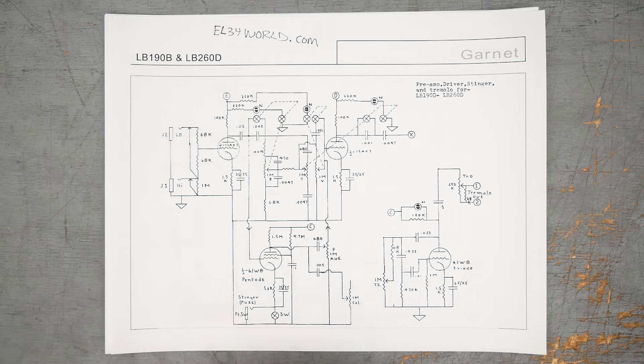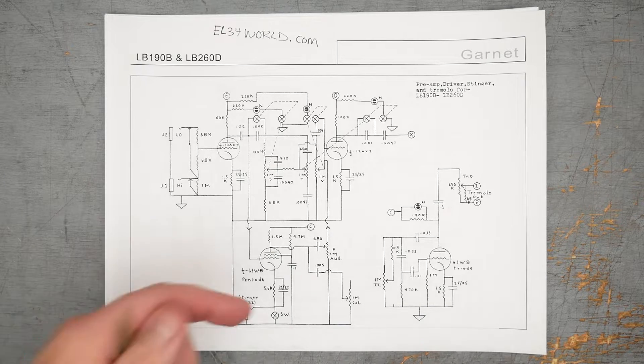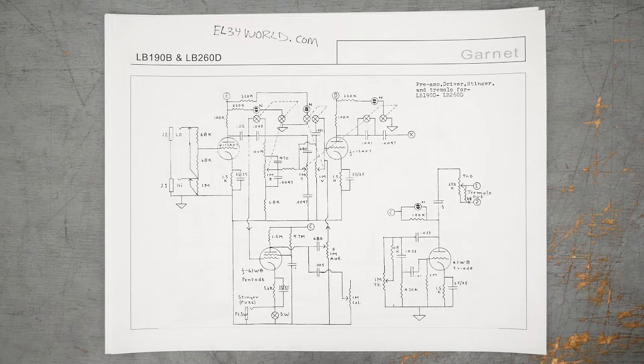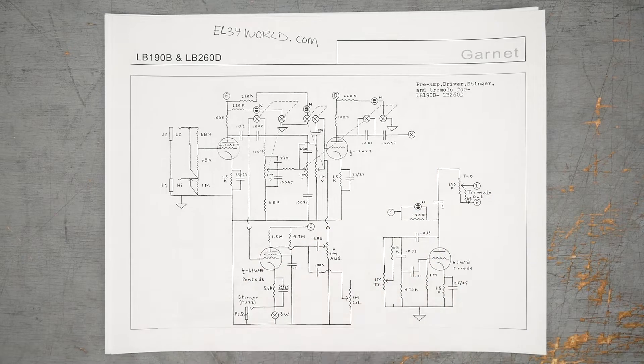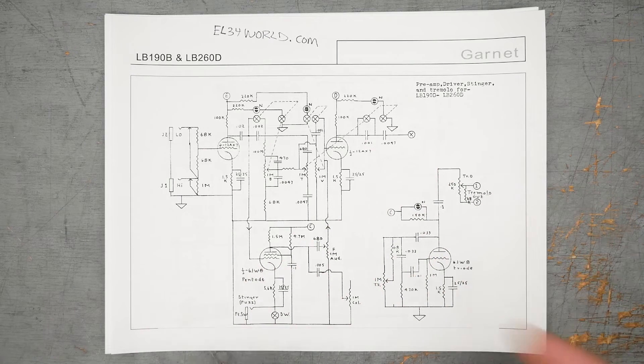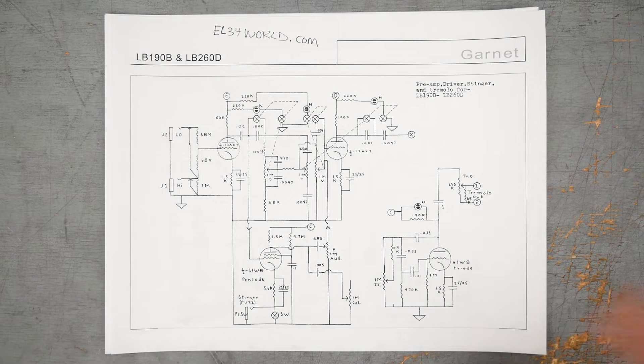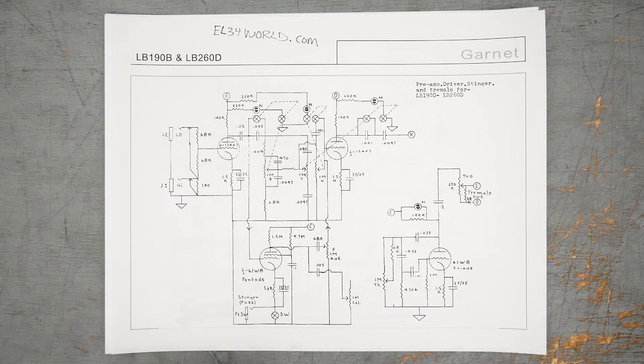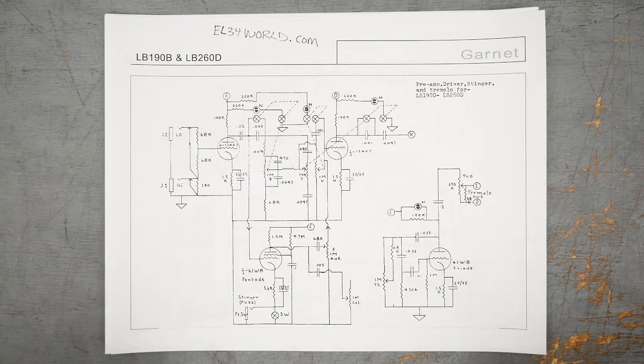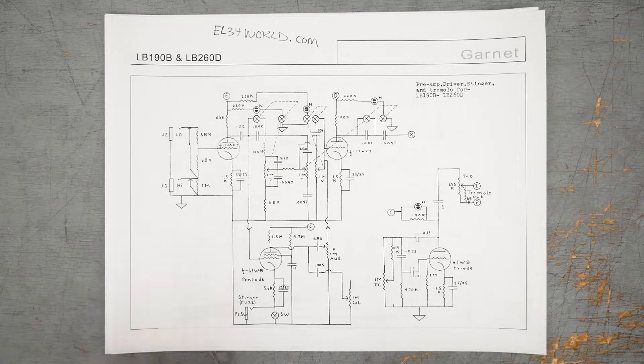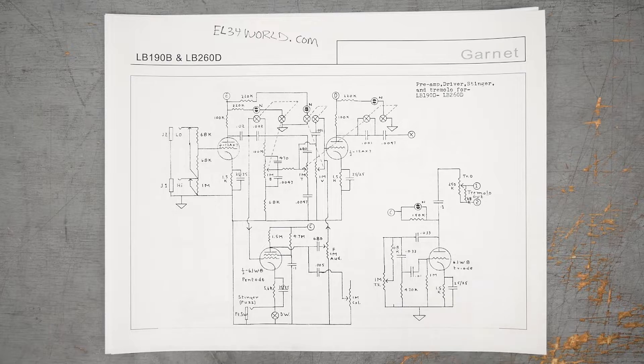So I pulled the transformers out of that PA head, and that's the transformers that I used for the high watt build I did earlier in the channel. Garnet amps was a company out of Canada. They made a whole range of tube amplifiers. They're one of the two big amplifier companies from Canada, the biggest one of course being Traynor.